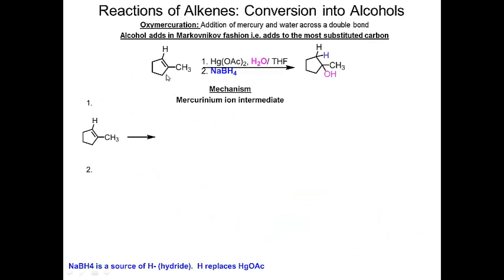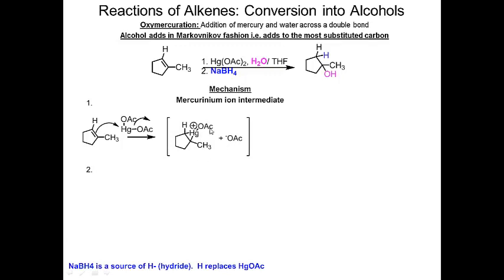Now let's look at oxymercuration, which is basically a sister reaction. The key difference is that OH adds to the most substituted carbon — oxymercuration follows Markovnikov addition, where OH adds to the most substituted carbon and H adds to the least substituted. OH comes from water and H comes from sodium borohydride, which is a source of H minus just like BH3. In the mechanism, mercury acetate reacts with the double bond to give a mercurinium ion intermediate — the 'ium' ending means it carries a positive charge.